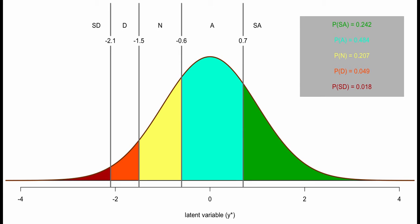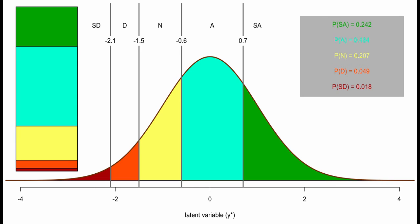With these particular tau cuts, we predict that about 24.2% of people would respond strongly agree, whereas only 1.8% would respond strongly disagree. We can also represent this as a stacked pie chart showing the proportion of people responding at each level of the ordinal scale, where dark red indicates strongly disagree and green indicates strongly agree.